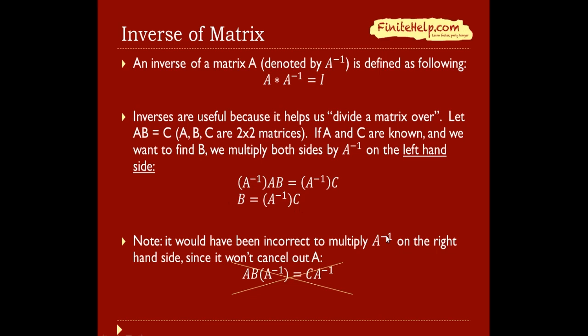Note that it would have been incorrect to multiply A inverse on the right hand side of both sides, because it won't cancel out A. So here you can see, A times B times A inverse, that won't come out to be B. So this is wrong.